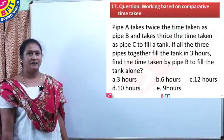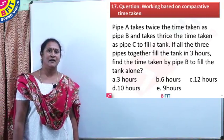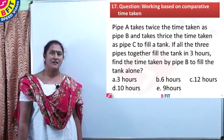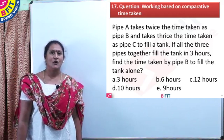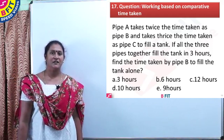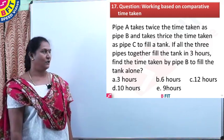So question number 17. Pipe A takes twice the time taken as B and takes thrice the time taken as pipe C to fill the tank. If all the 3 pipes together fill the tank in 3 hours, find time taken by pipe B to fill the tank alone.